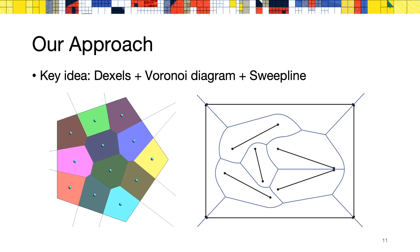With our approach, we seek to perform morphological operations, such as dilation and erosion, directly on this dexel data structure. The key idea behind our method is to leverage a Voronoi diagram formed by the segments in the input dexels, and use a sweep line algorithm to compute the ray segments for the dilated shape directly.